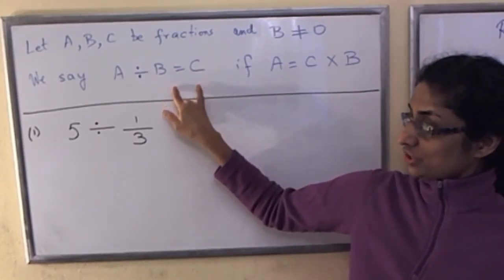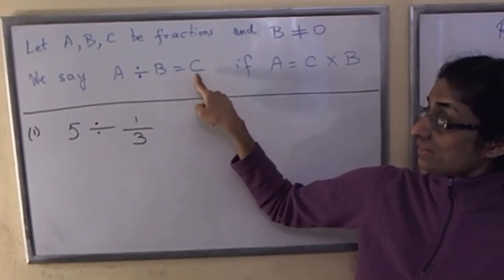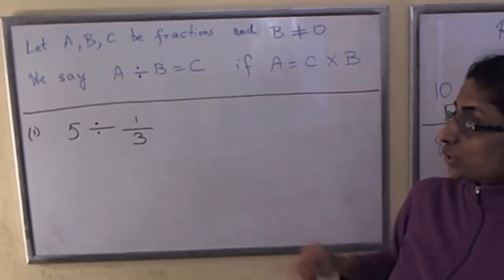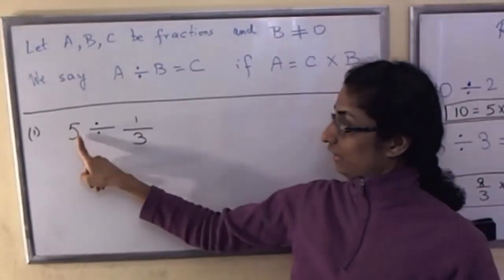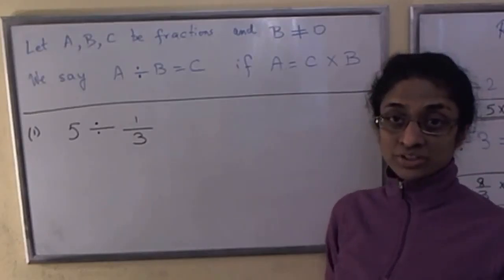Let's review the definition. We have three fractions and b is non-zero. We say a divided by b is another fraction c if this whole is true. So here we have a whole number divided by a fraction and we would like to know what it is.